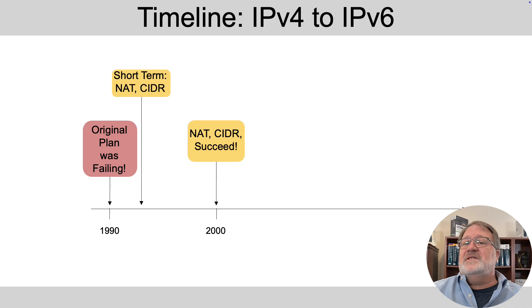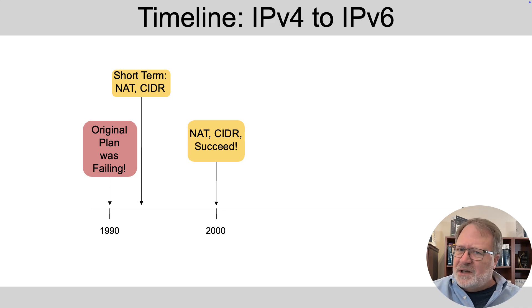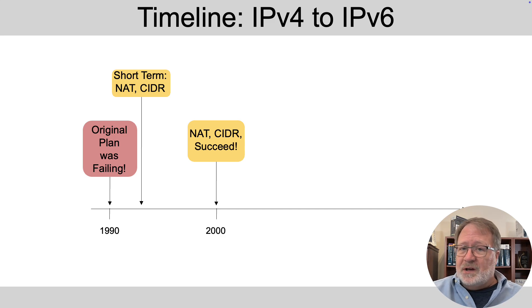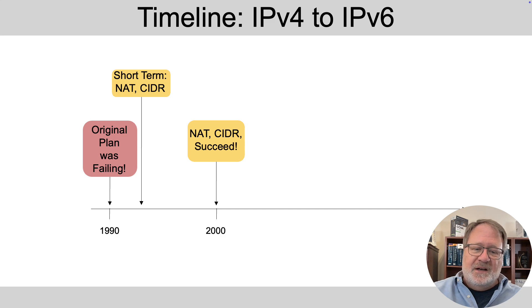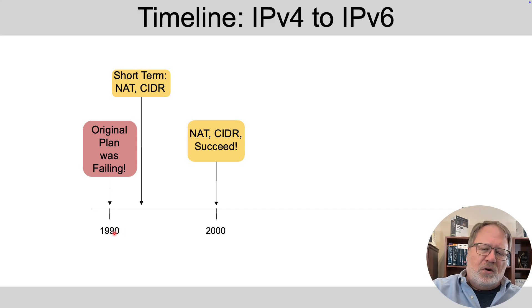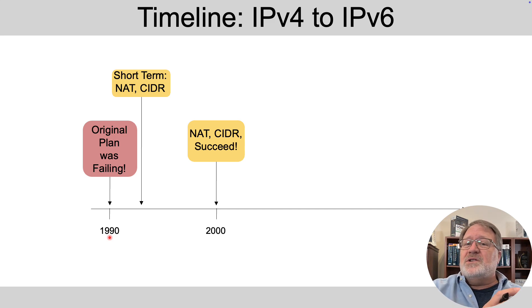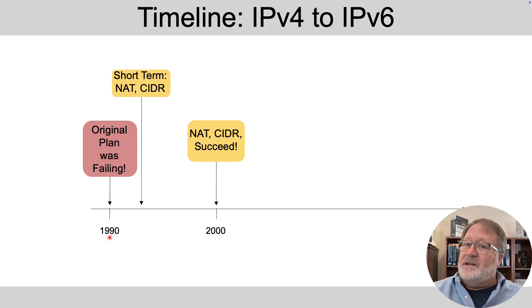With that process of assigning a Class A, B, or C network to anyone that applied and justified it, it was pretty clear by the early 1990s — when the internet was commercialized — that the world was going to run out of public, unique IPv4 addresses. So the original plan was failing. There were two plans: one was a short-term plan to shore up IPv4, and one was to replace it with a new version of the protocol — IP version 6.